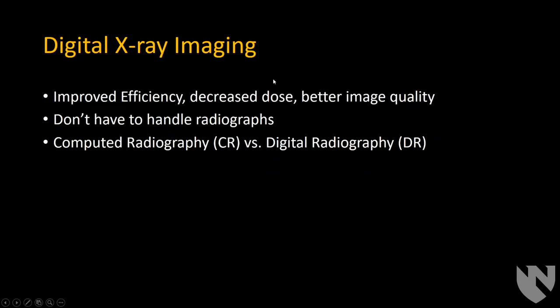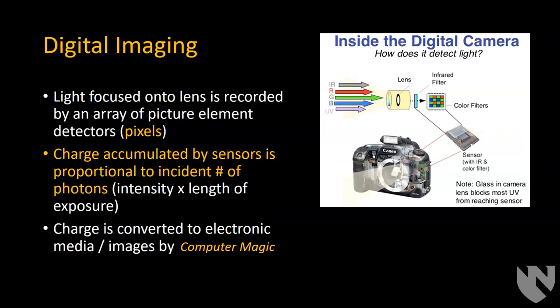Digital x-ray imaging really improves efficiency because you don't have to handle film and do all the developing. It also helps decrease dose and increase image quality in terms of contrast, although the spatial resolution is not as high when comparing physical pixel detectors to the small silver atoms developed on film. There are two types of digital x-ray imaging: computed radiography versus digital radiography. In digital imaging, like a digital camera, light is focused through a lens onto a detector with many small pixels, and the charge accumulated is proportional to the number of photons.